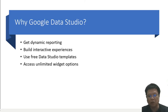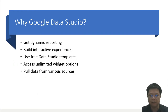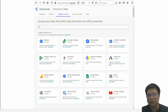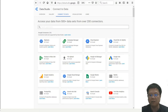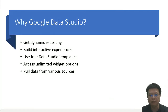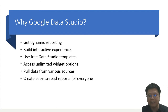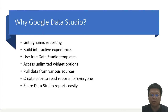Users may access widget options and drag and drop to create a chart or graph. Users may also pull data from 16 different resources or sources. However, Google Data Studio states it can connect to more than 500 datasets from over 200 third-party sources. Furthermore, users can create simple and easy-to-read reports for everyone, and more importantly, the report can be shared easily.